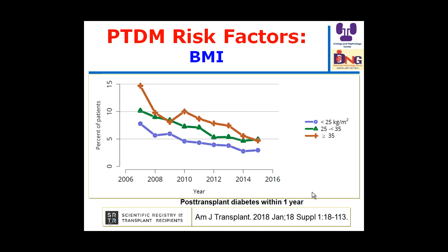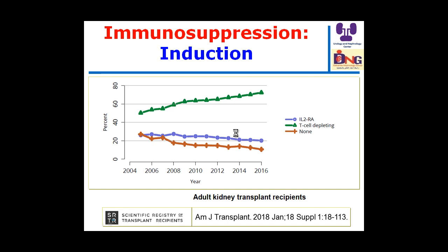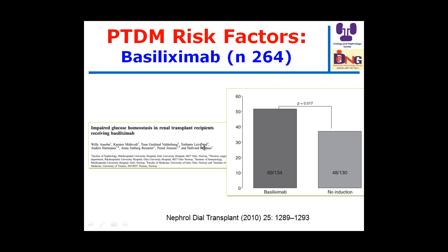Body mass index is also a risk factor: the higher the BMI, the higher the risk, particularly for those with BMI above 35 kg/m². Regarding immunosuppressive induction therapy, the major current induction therapy is thymoglobulin (ATG), followed by the IL-2 receptor antagonist basiliximab, with some patients receiving no induction.